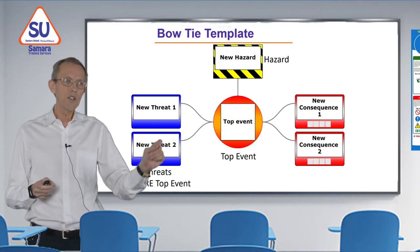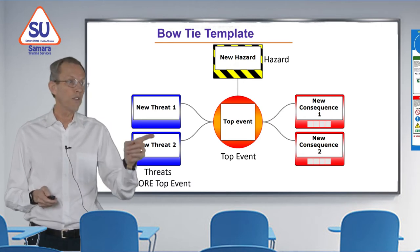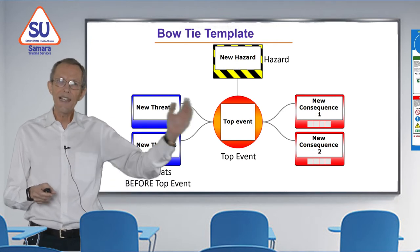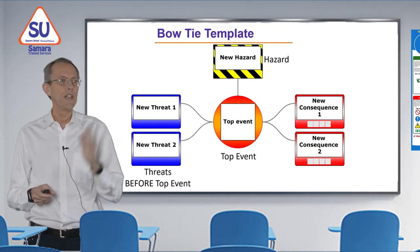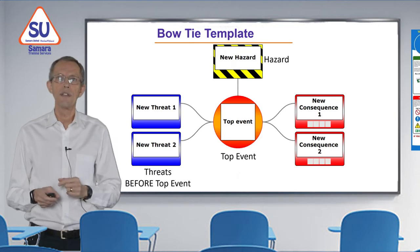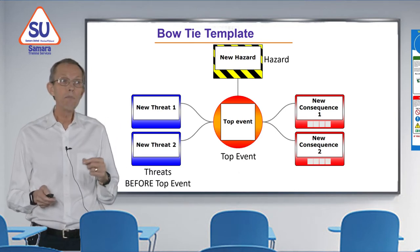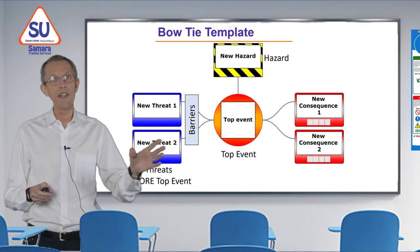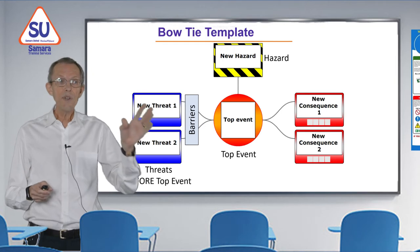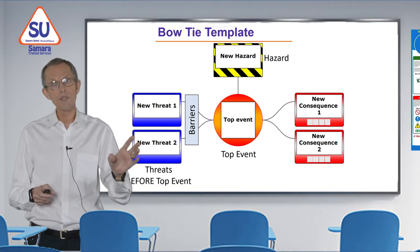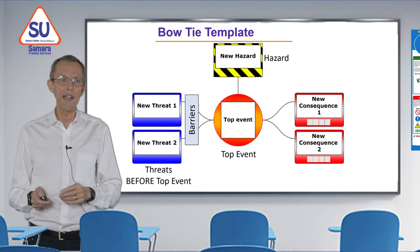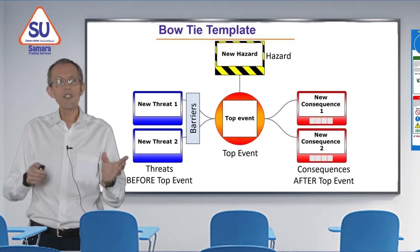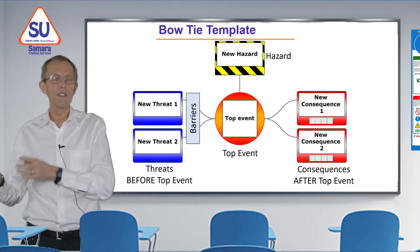The things that could cause that top event to happen are called threats. Threats happen before the top event — they lead up to it and cause it. We will now introduce some barriers or controls to try and stop that top event from happening. Even with the barriers, sometimes the top event will happen, and then we have a consequence — something that happens after the top event.